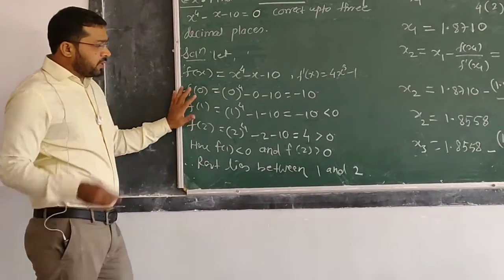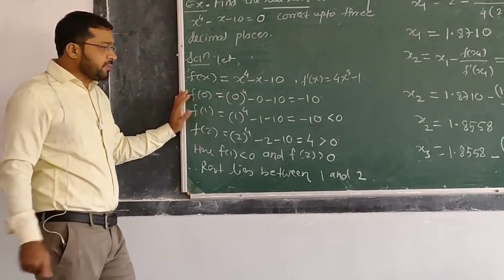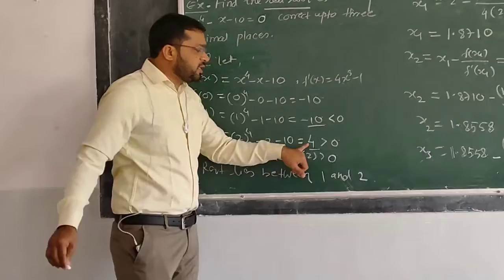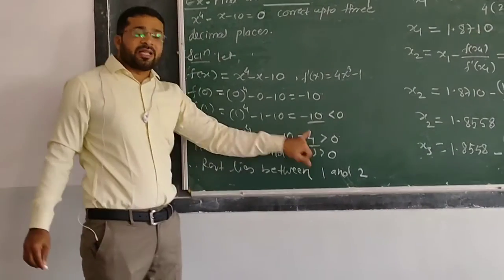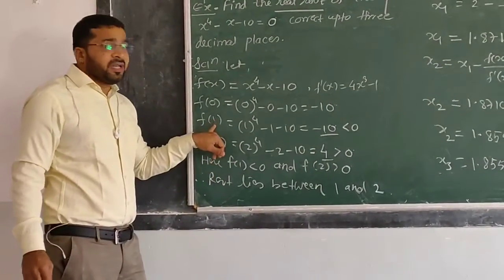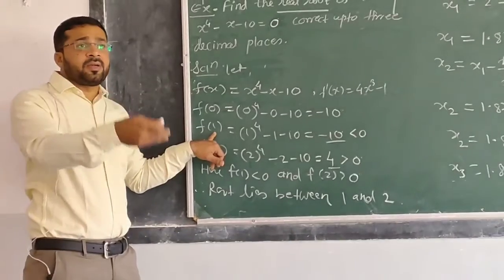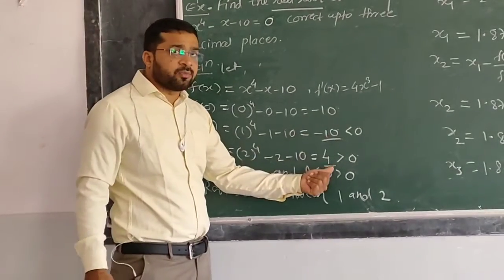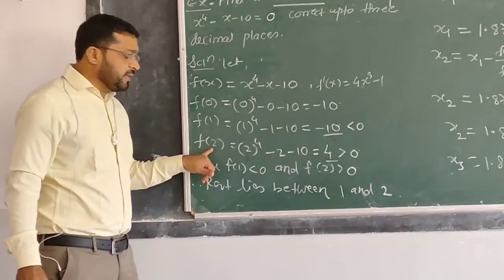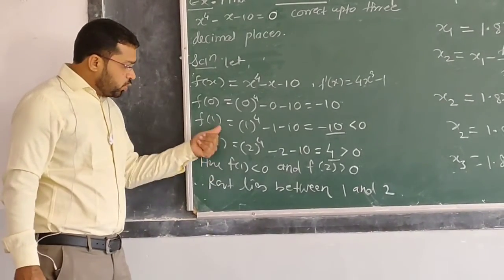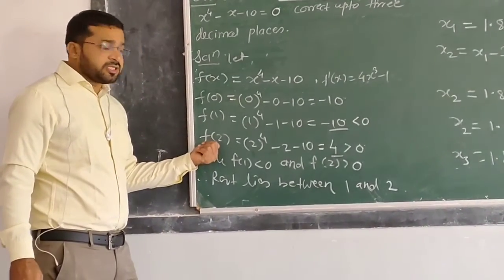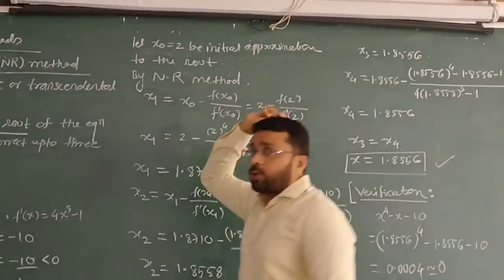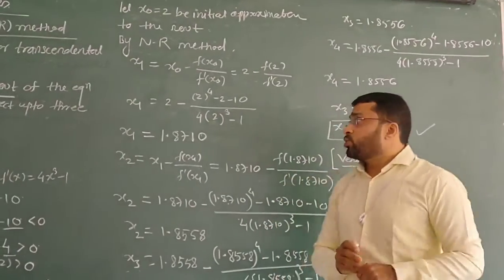After that, we have to consider the initial approximation to the solution. Here you can see that zero is closer to which side - to 2. So I take the initial approximation as x₀ = 2. With the initial approximation, we apply the formula of Newton-Raphson method.